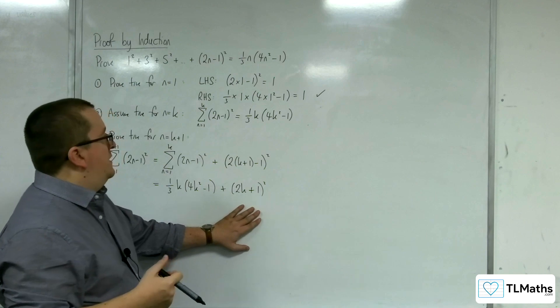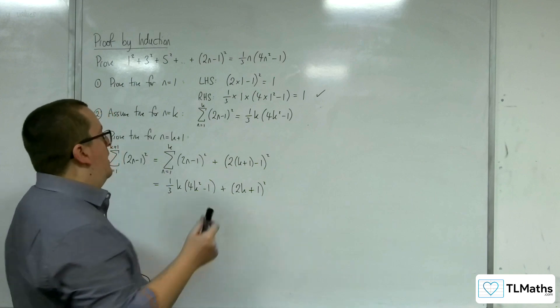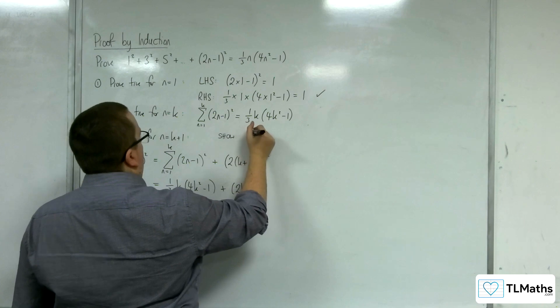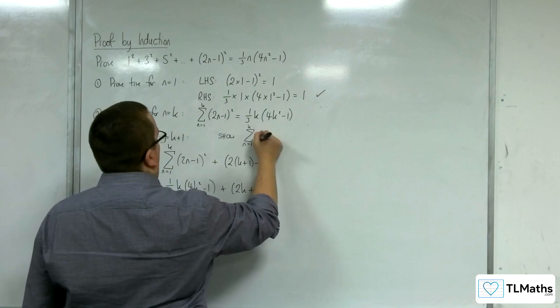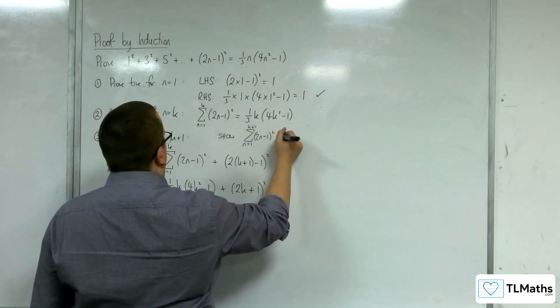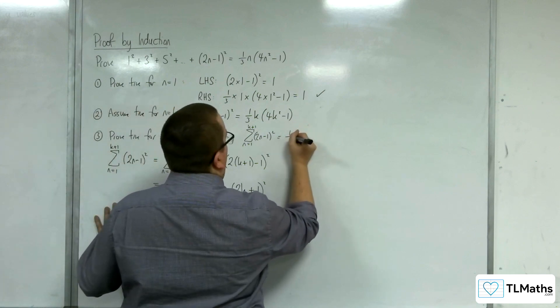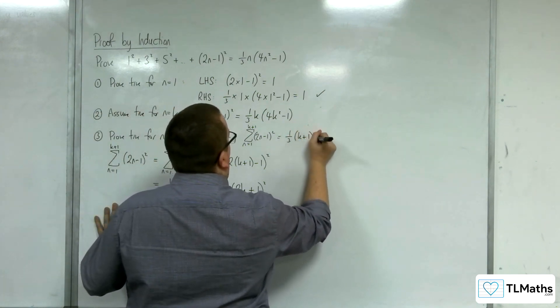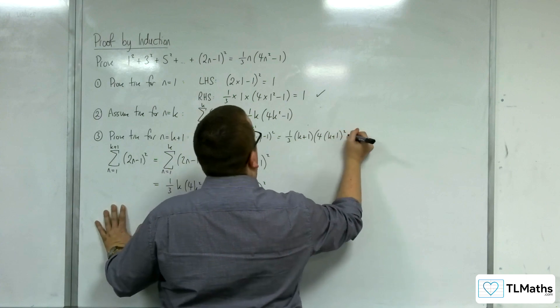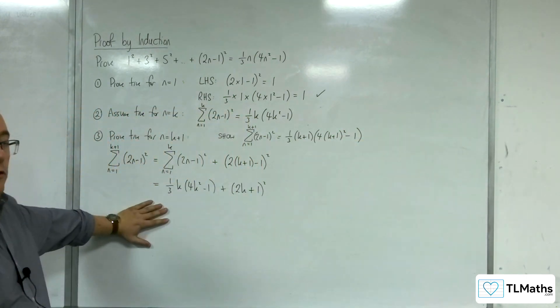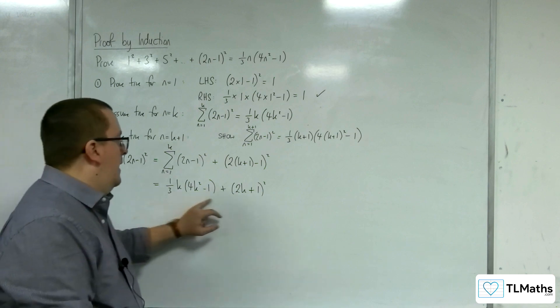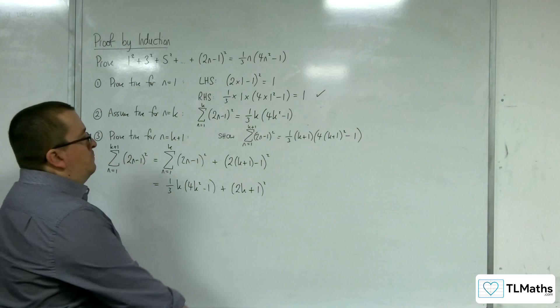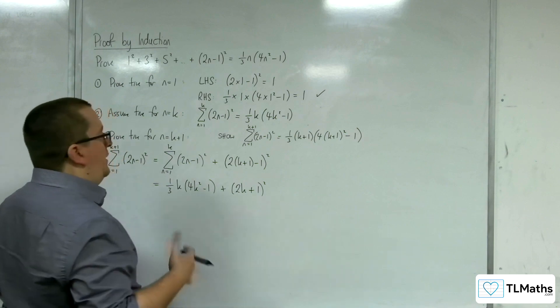So I want to simplify this in such a way that I arrive at, so I want to show that the sum from n is 1 up to k plus 1 of 2n minus 1 squared is equal to 1 third times k plus 1 times 4 lots of k plus 1 squared minus 1. That's what I want to show. So I want to get it into that format. So I can't really do much until I have simplified this. So let's see what we can do.